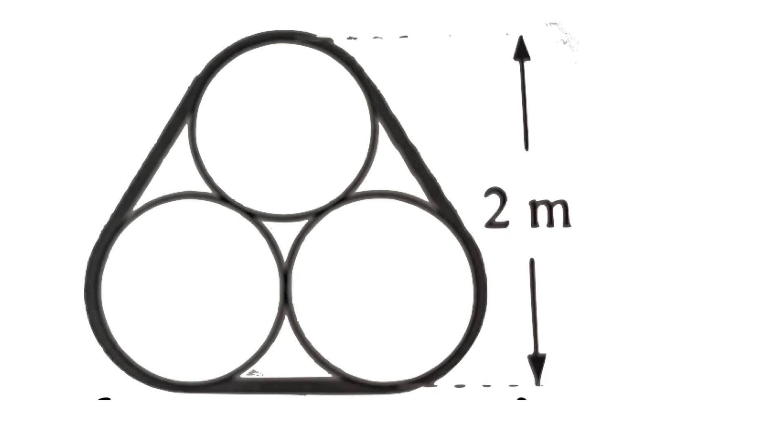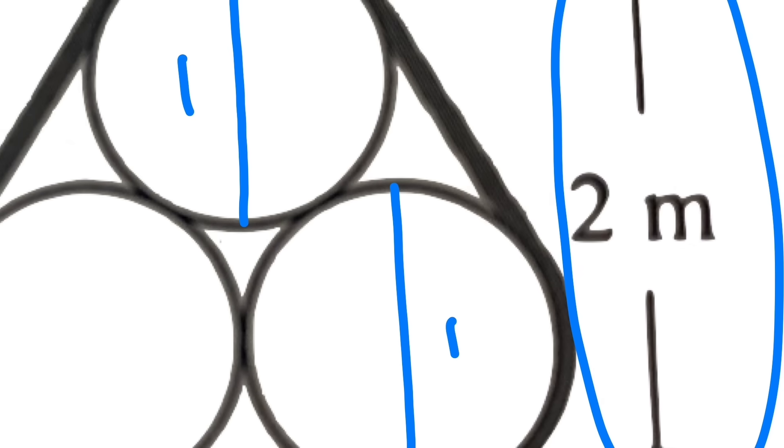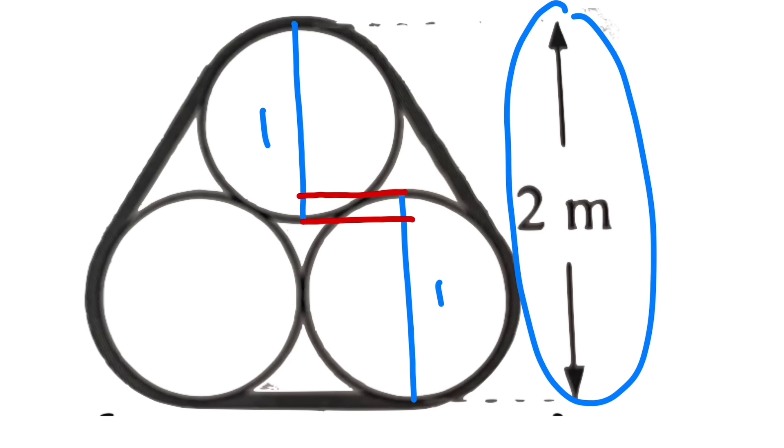But before I show you guys the solution, I would like to point out that we are given this right here is 2, but this right here does not mean the diameter of the circle is 1 because if you see, okay that's the diameter. If you say that's 1 and if you say that's also 1, and if you zoom in, then you can see that unfortunately there is an overlap, right? So it's not that easy.